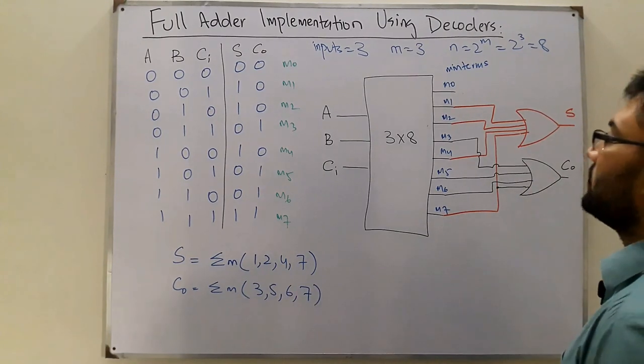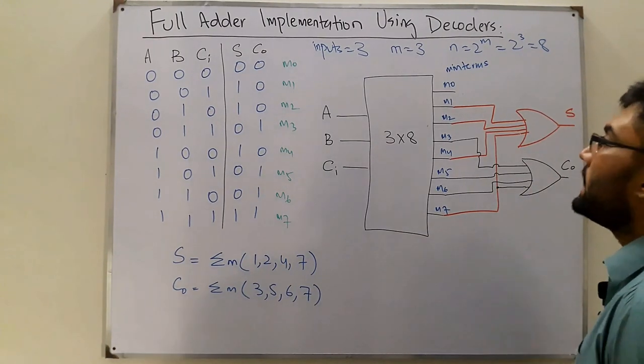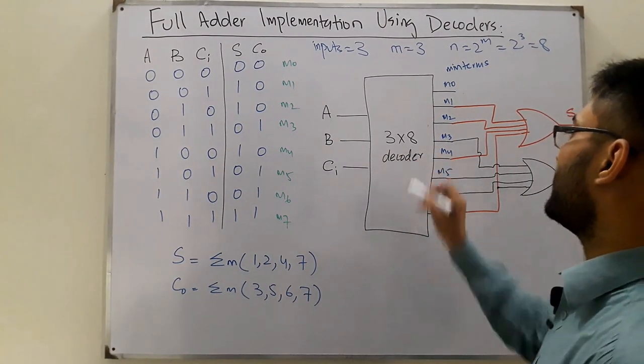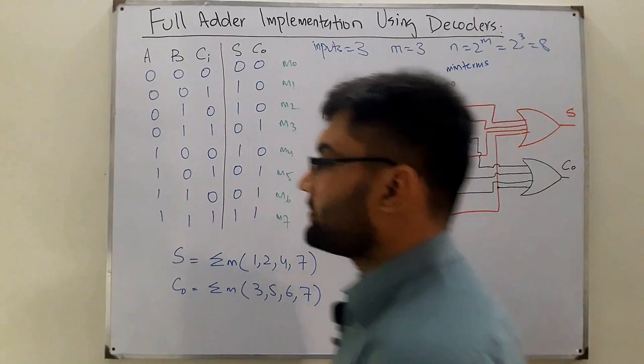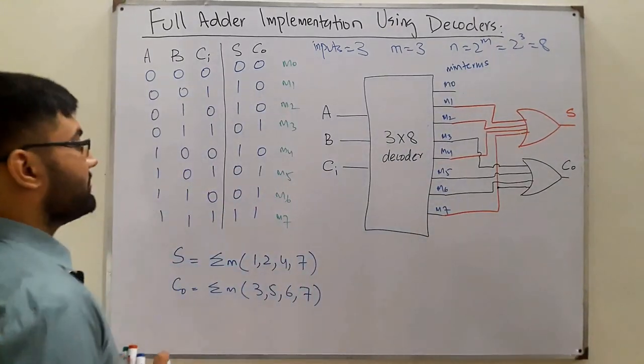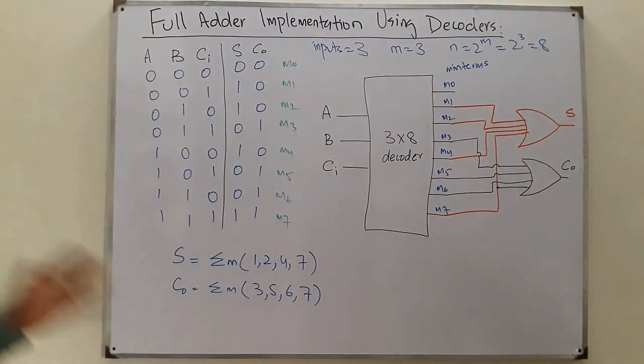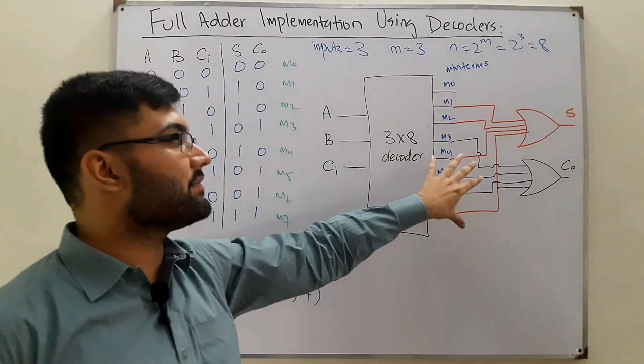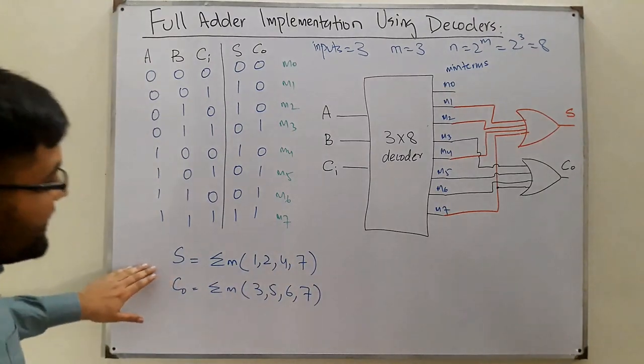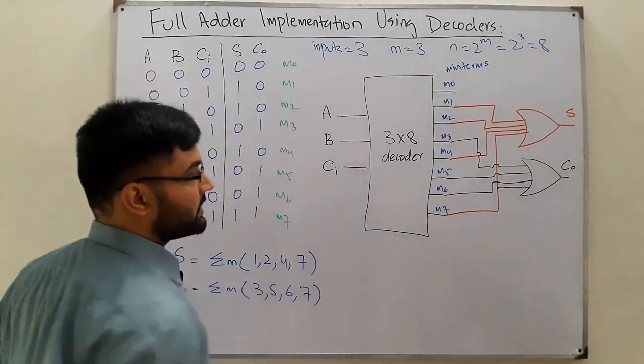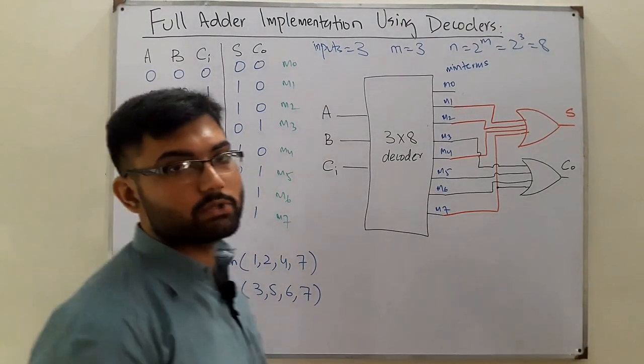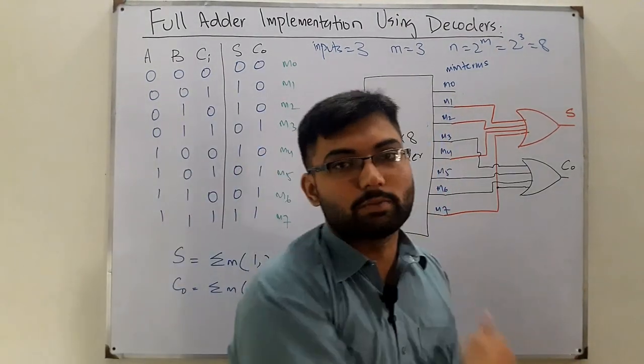So this is how you implement any circuit. You take the minterms for which the function value is high, give it to the decoder as input—the very inputs given over here—and the output you have the minterms. You check for the high minterms and then you OR them together. That's all about this lecture. In the next lecture very soon inshallah, till then take care, goodbye.